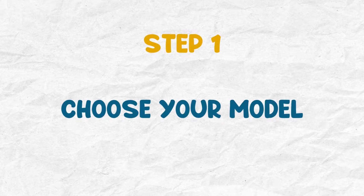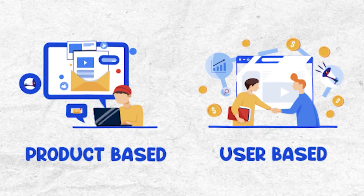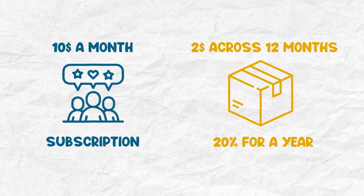When crafting your affiliate program there are two main models to choose from: either product-based or user-based. Product-based affiliate programs tell potential partners that every time you bring a customer to my product via the affiliate link, I will pay you a certain percentage of the revenue. It could be a percentage of the first transaction or based on a certain time frame — for example, you bring in a customer who buys a subscription for $10 a month and I'll give you 20% for a year, which means $2 across 12 months. You would use this model if you only have one product.